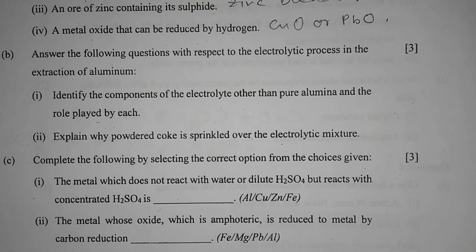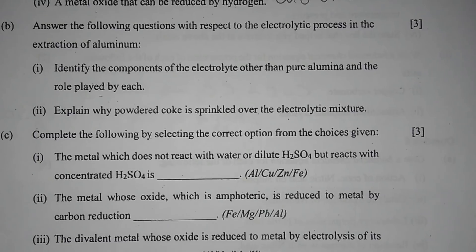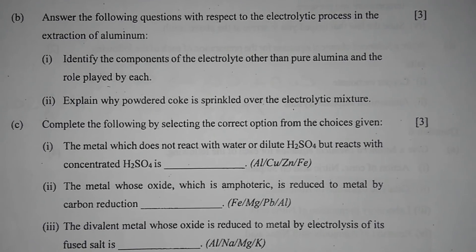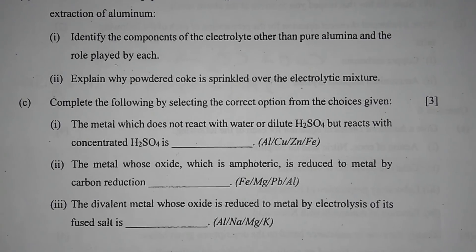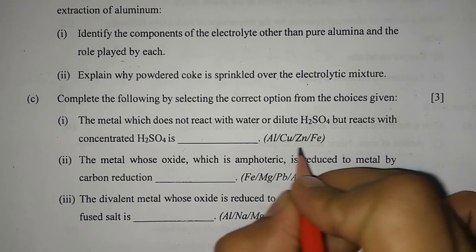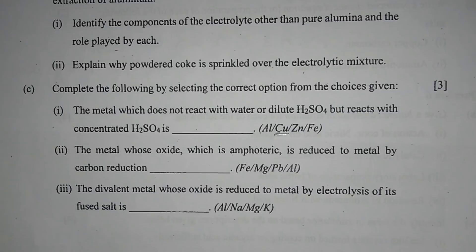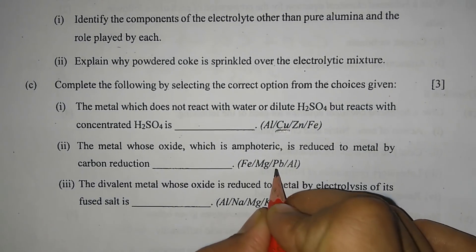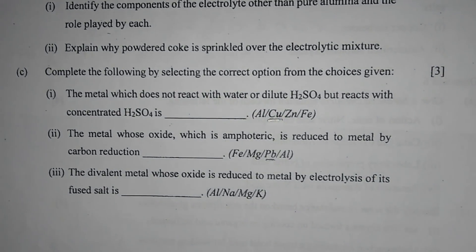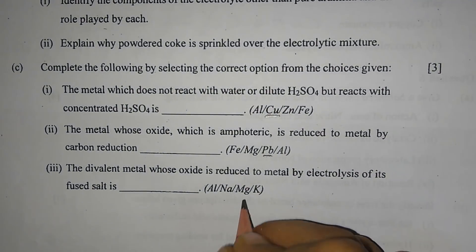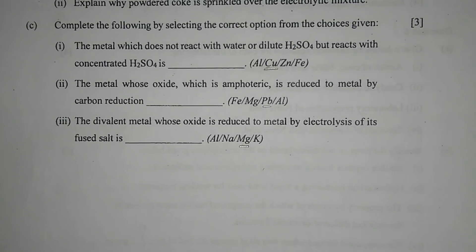Question 7c: complete the following by selecting the correct option. Number 1 — the metal which does not react with water or dilute H2SO4 but reacts with concentrated H2SO4 is copper. Number 2 — the metal whose oxide is amphoteric and is reduced to metal by carbon reduction is lead. Number 3 — the divalent metal whose oxide is reduced to metal by electrolysis of its fused salt is magnesium. So guys, here we come to an end of this video. See you in the next video — goodbye!